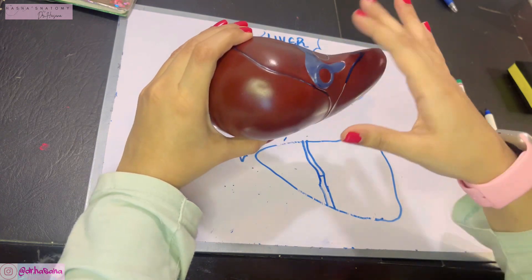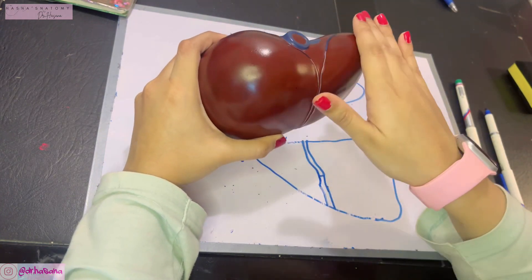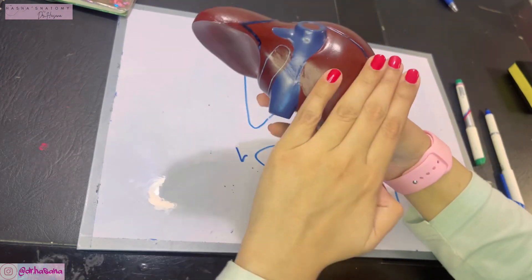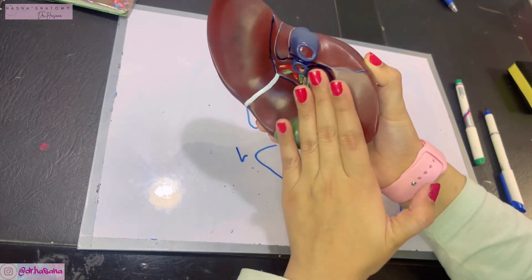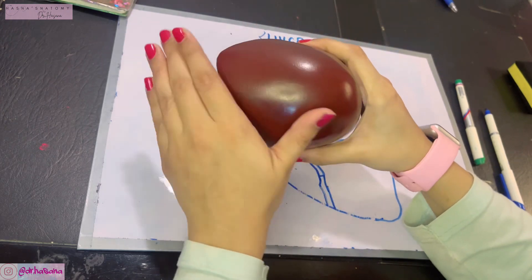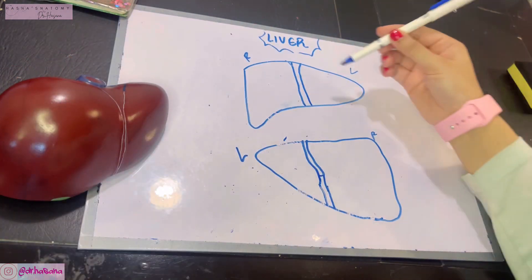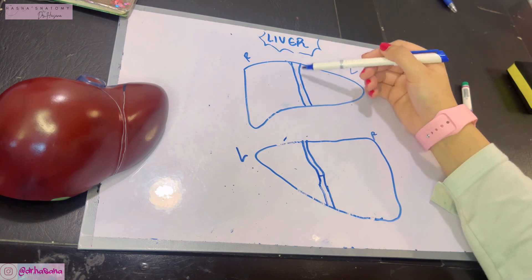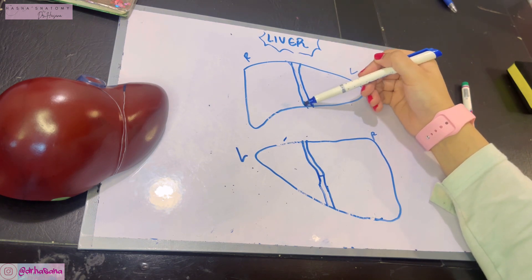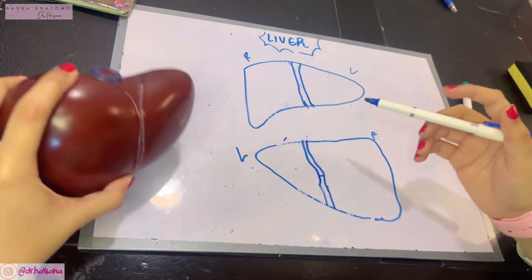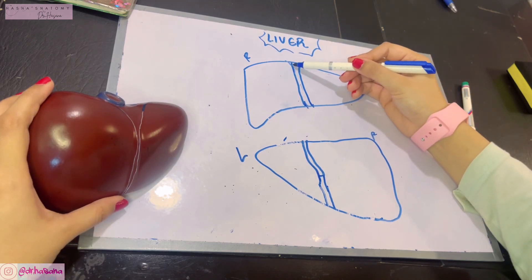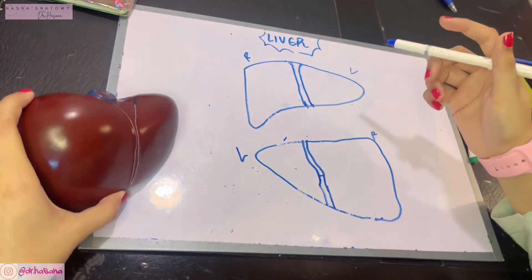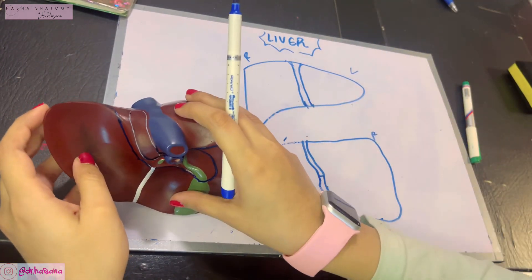The liver has five surfaces in total: the superior surface, the anterior surface, a posterior surface, an inferior surface, and a right surface. The anterior surface has nothing hugely prominent except the falciform ligament fissure, which is very prominently seen. Superiorly, the falciform ligament continues to become the coronary ligament, and posteriorly the right and left lobes are divided.